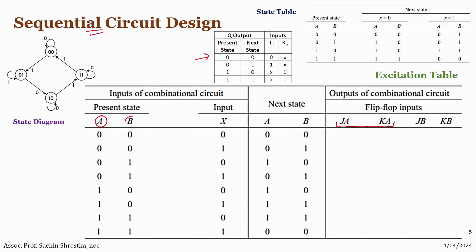For B, we need another flip-flop with inputs JB and KB. For the present state of A changing from zero to zero — no change in state — the JK excitation value is 0X. Likewise for B changing zero to zero, it is also 0X. For the next row, A again goes zero to zero giving 0X, and B changes from zero to one, so the excitation value is 1X.